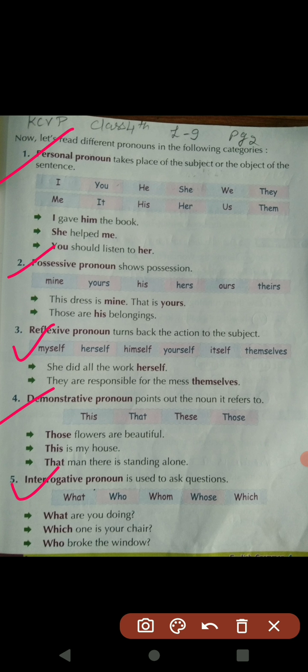First, personal pronoun — it takes the place of the subject or object of the sentence. The subject comes at the starting of the sentence and the object comes at the end. In place of both, the words we use — such as I, you, he, we, they, me, it, his, her, us, them — all of these are personal pronouns.